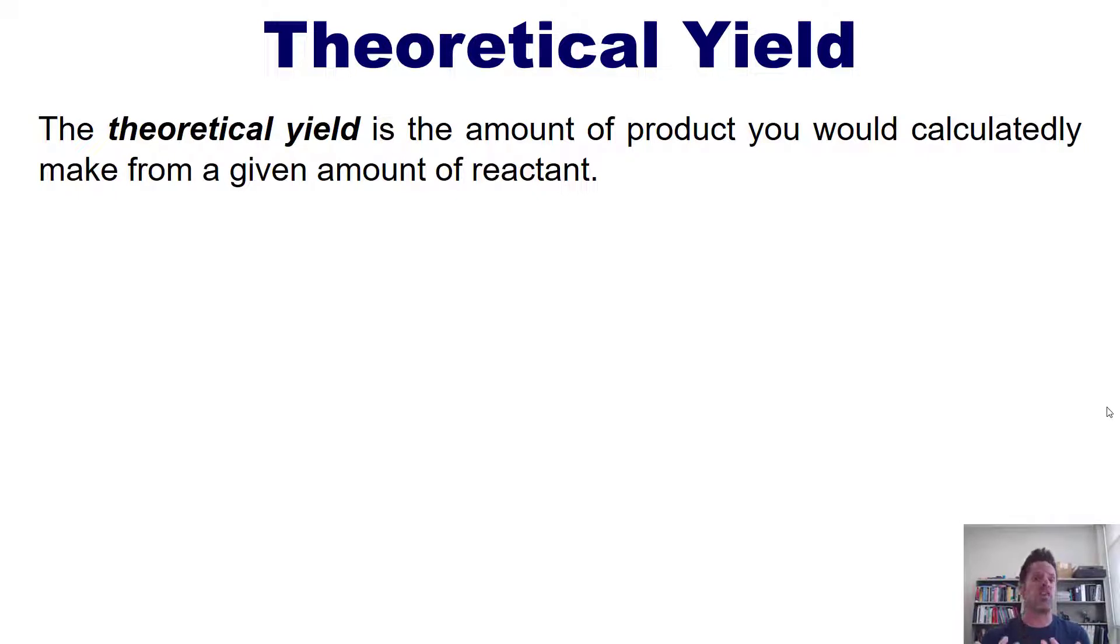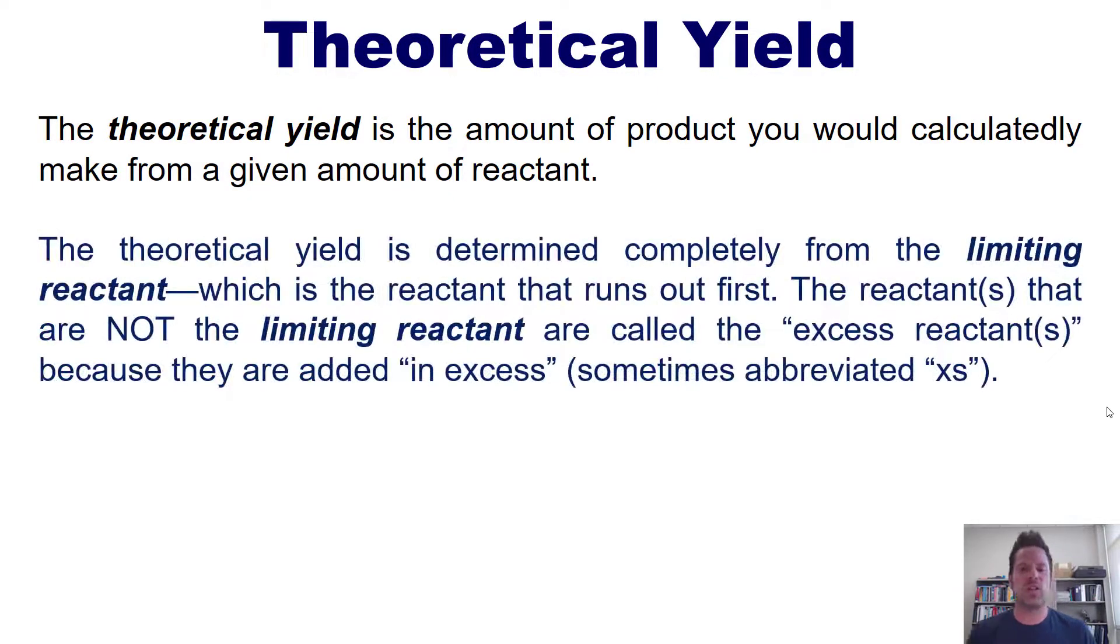In other words, it's the amount of product that you should theoretically, calculatedly make. The theoretical yield is determined completely from the limiting reactant, which is the reactant that runs out first. The reactants that are not the limiting reactant are called the excess reactants because they're added in excess. We sometimes abbreviate excess with the letters XS because it's shorthand easier.